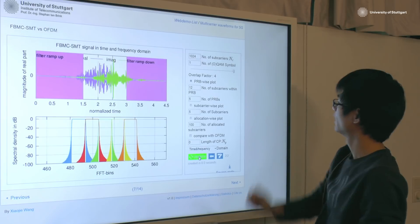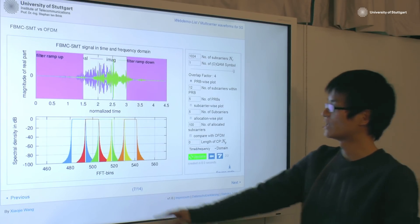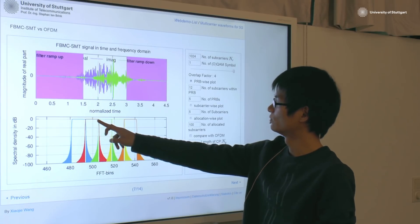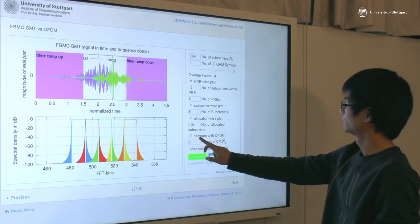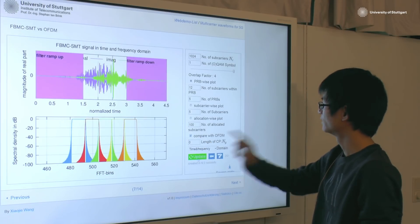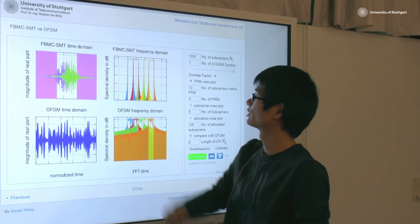And also, we can change the overlapping factor for FBMC. So, we have a signal with very good frequency property. And we can compare this waveform with OFDM in time and in frequency.